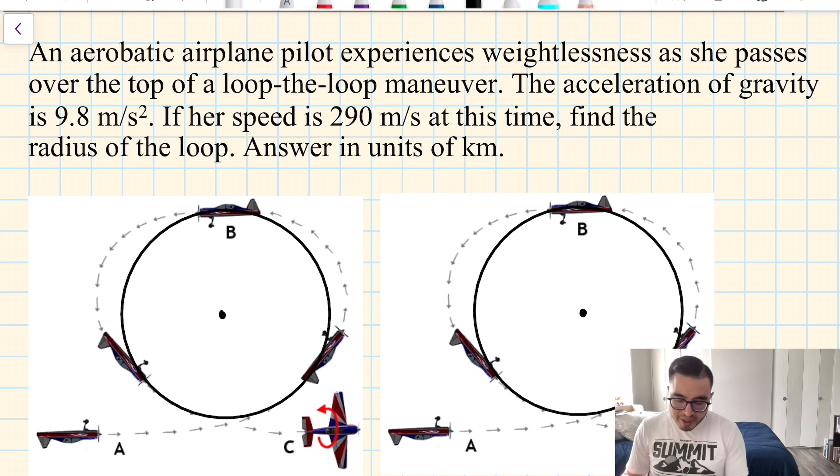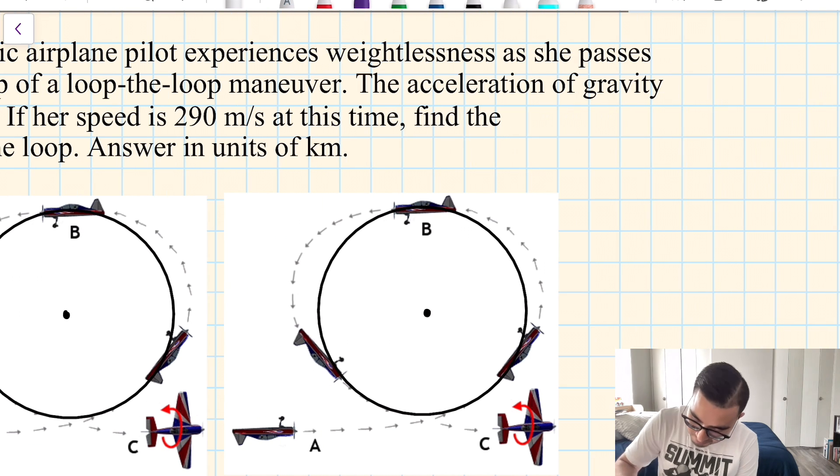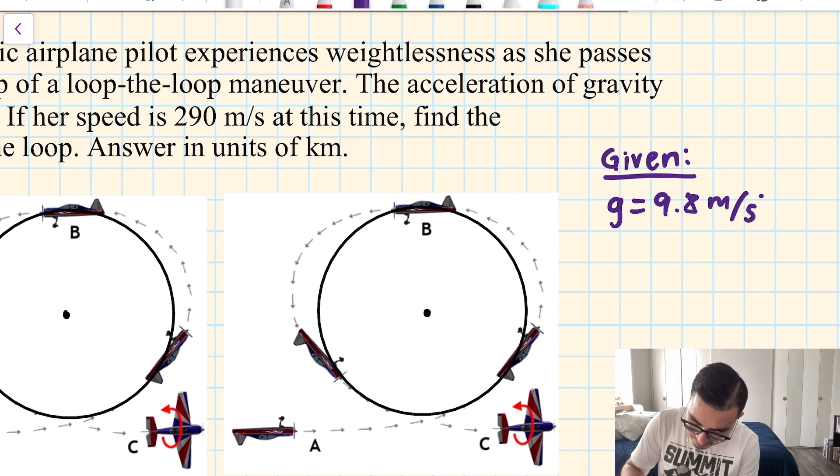And let's write down what we know, our given. We know the acceleration of gravity, 9.8 meters per second squared. We know the velocity, 290 meters per second.